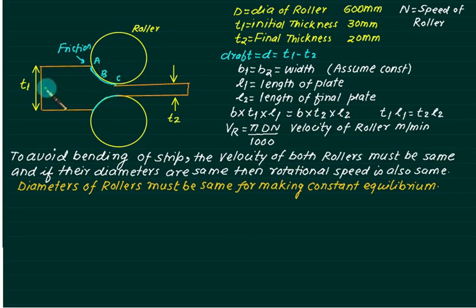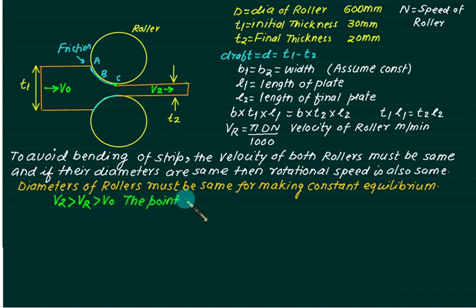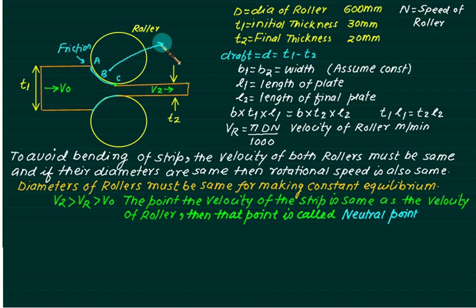The velocity at the entry is V0, constant up to point A. The exit velocity is V2 or Vf, from point C onward. Velocity continuously varies from V0 to V2. The exit velocity V2 is larger than the roller velocity at point B. At point A, velocity equals V0. The point where the strip velocity equals the roller velocity is called the neutral point — here B represents the neutral point. There is also one neutral point on the bottom side.